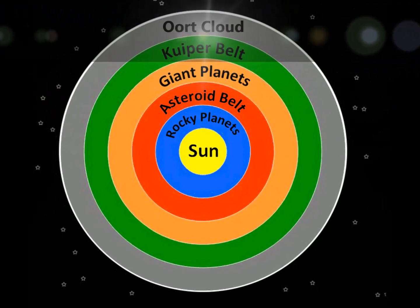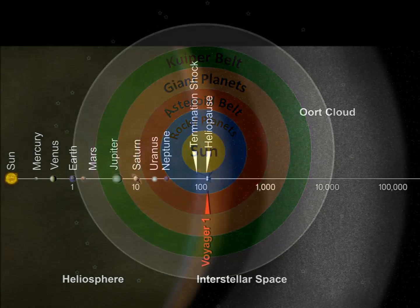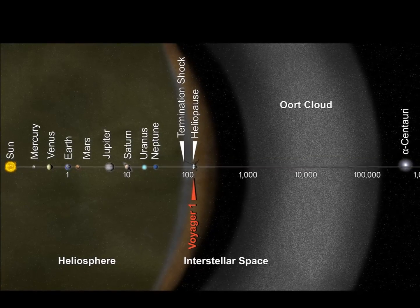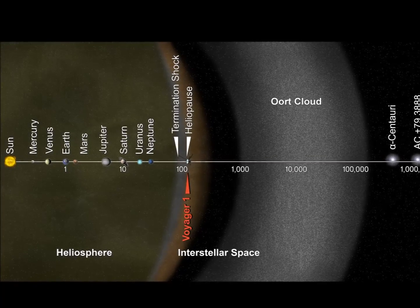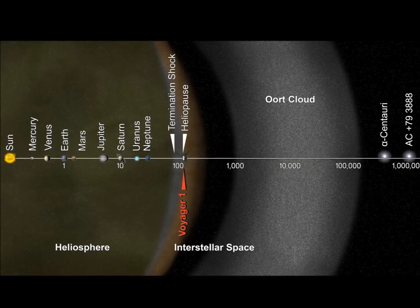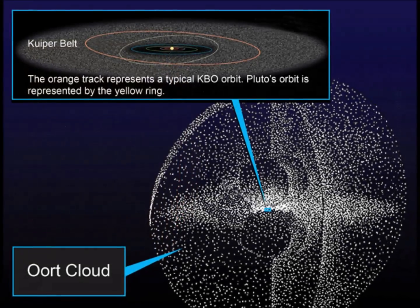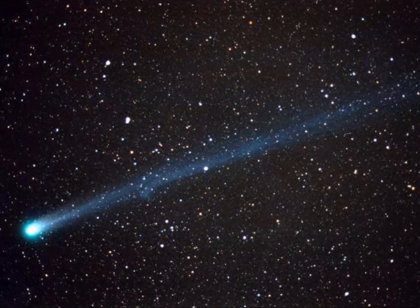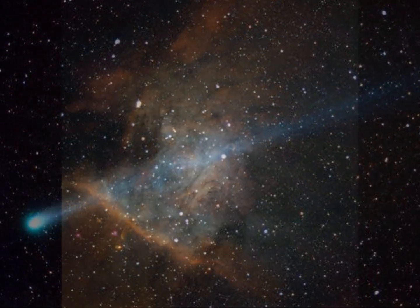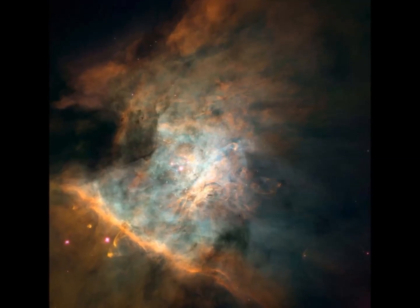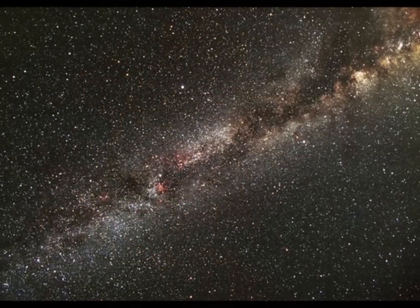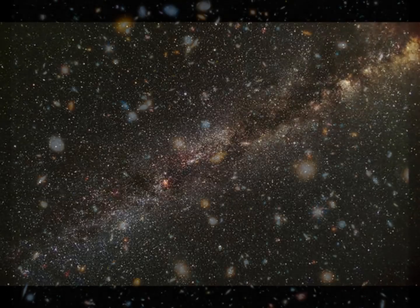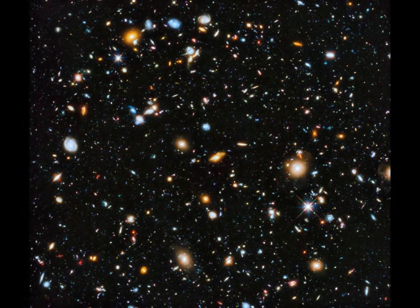The Oort Cloud, named for astronomer Jan Oort, is a vast spherical region of trillions of small icy objects that exist in the outermost reaches of the solar system. This cloud of particles is theorized to be the remains of the material that formed the Sun and planets. The outer part of this ring is only loosely bound to our solar system and thus is easily affected by the gravitational pull of passing stars, nebulae, and our own Milky Way galaxy. These forces occasionally dislodge comets from their orbits within the cloud and send them towards the inner solar system or out beyond our solar system into interstellar space.